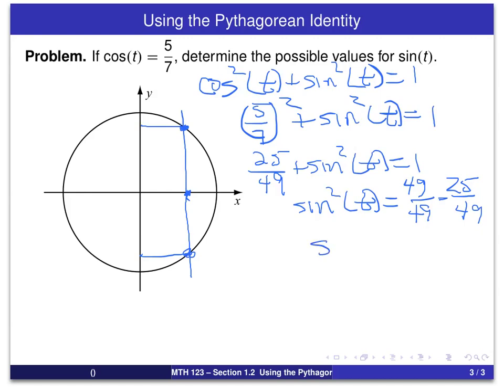Or we get sine squared of t equals 24 over 49. And it's the fact that we've got sine squared of t is what's going to give us two solutions for sine of t.